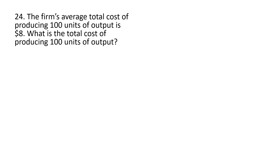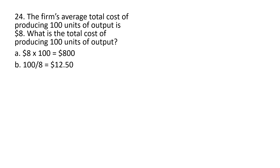Question 24: the firm's average total cost of producing 100 units of output is $8. What is the total cost of producing 100 units of output? It's just average total cost times quantity: 8 times 100 equals $800. The other answer choices are incorrect. Answer A. To get total cost, we multiply average total cost by the quantity of output.